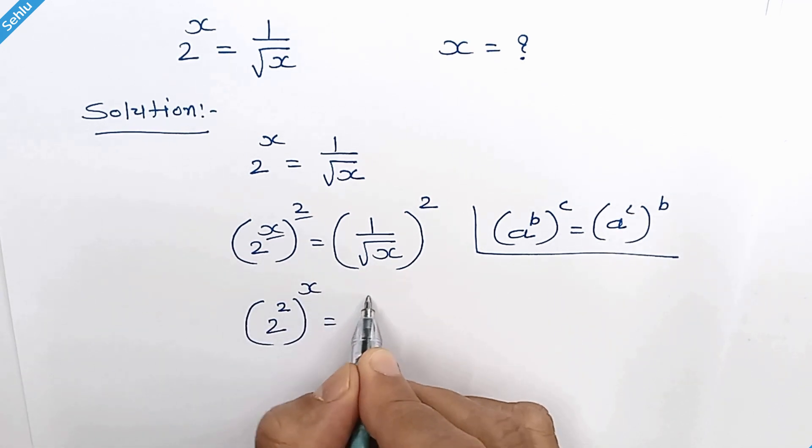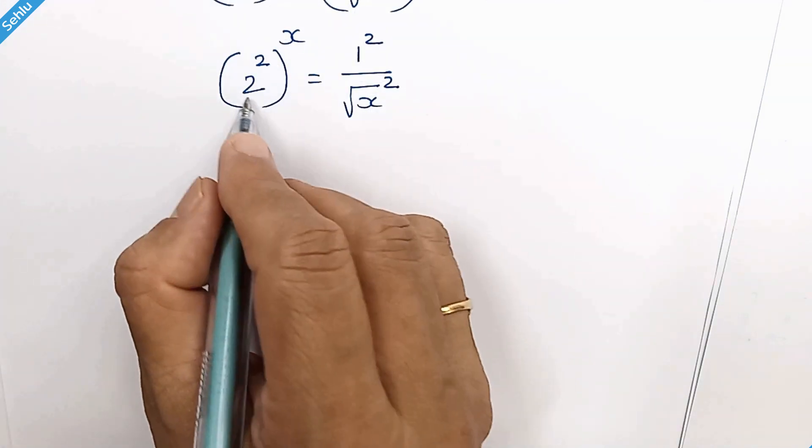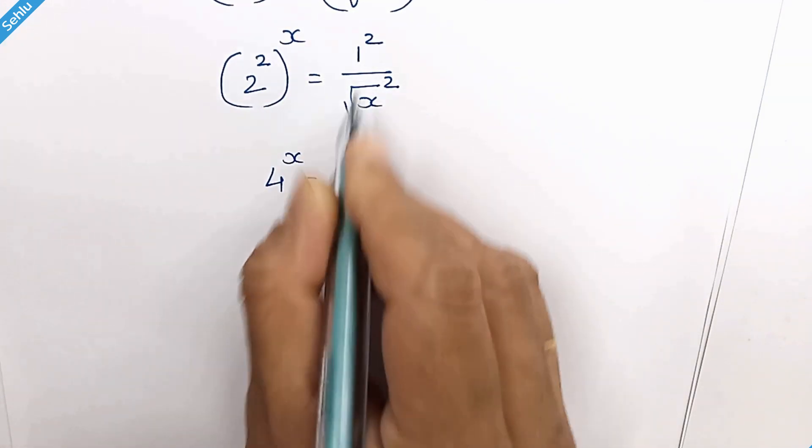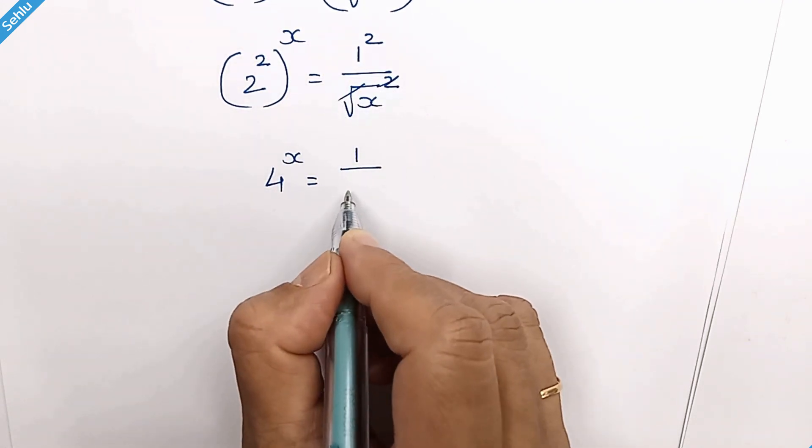And here we can write 1 square over square root of x square. 2 square is 4. 1 square will remain 1 and this square and square root will cancel.